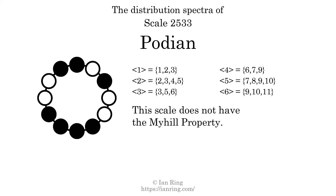If every spectrum has exactly two specific intervals, we call that the Myhill property. This scale does not have the Myhill property. Since the generic interval ranges overlap, this scale is an improper scale.